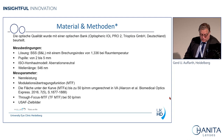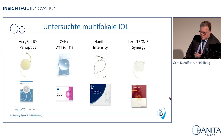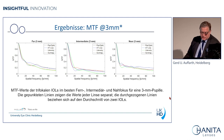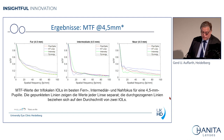We compared the Intensity with the Panoptix, the AT LISA tri, and the Tecnis Synergy. The Synergy is a mixture of a bifocal and an EDOF lens, while the others are trifocal — the Panoptix even pentafocal. The idea was to look for non-inferiority. Looking at the MTF curves, which give an idea about image quality at different spatial frequencies, there is essentially no difference at far, intermediate, and near at a 3 mm pupil. At a 4.5 mm pupil the outcome is the same as well.